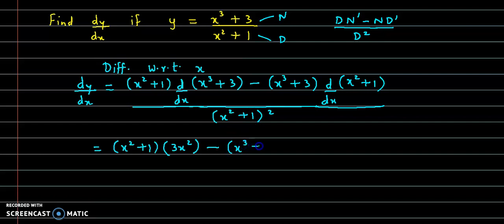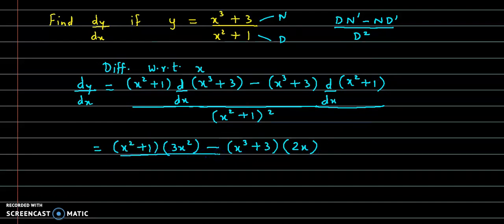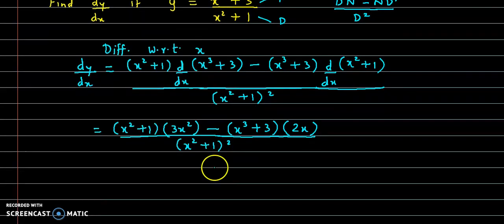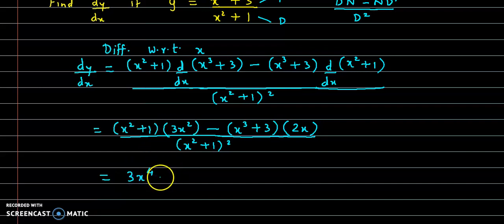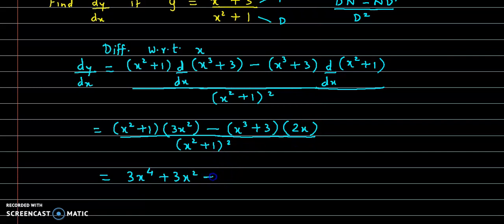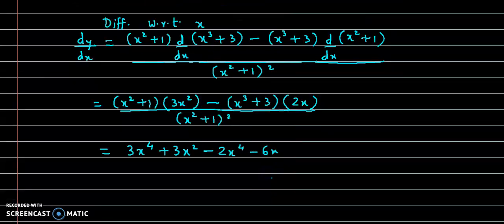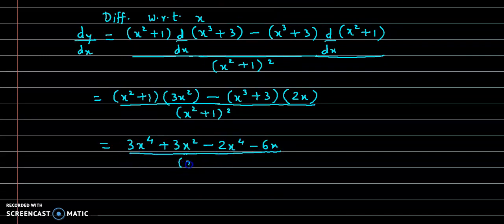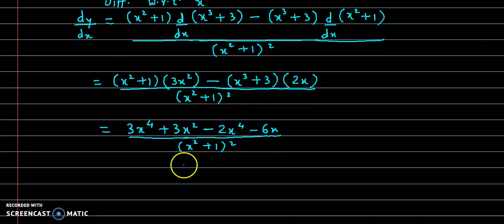Minus x cube plus 3 into derivative of x square plus 1, divided by x square plus 1 the whole square. Simplifying the numerator: 3x square into x square gives 3 times x raised to 4; 3x square into 1 gives 3x square; x cube into 2x gives minus 2 times x raised to 4; and 3 into 2x gives 6x, with a minus sign so minus 6x, divided by x square plus 1 the whole square.